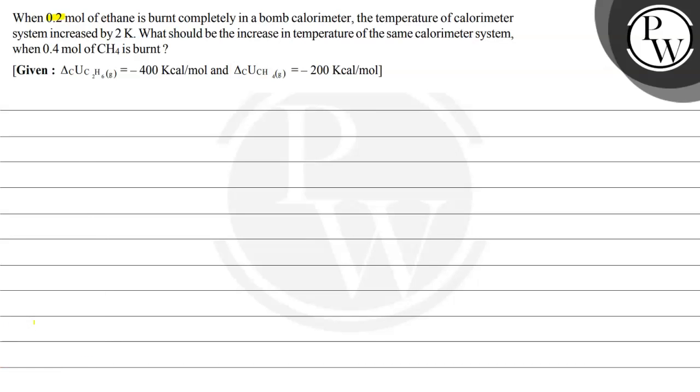So the question says when 0.2 mole of ethane is burned completely in a bomb calorimeter, the temperature of the calorimeter system is increased by 2 Kelvin. What should be the increase in temperature of the same calorimeter system when...